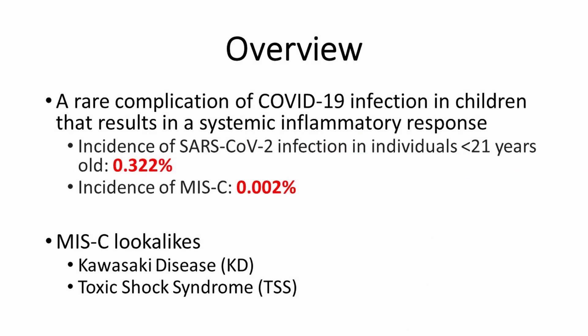Severe lung involvement with acute respiratory failure is the most common complication of COVID-19 in adults, and many of these patients have complications in multiple organs, including the heart. In contrast, most children and adolescents with SARS-CoV-2 infection have mild COVID-19 that does not actually lead to medical intervention.